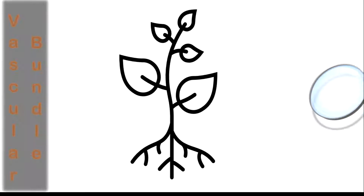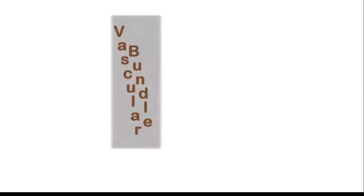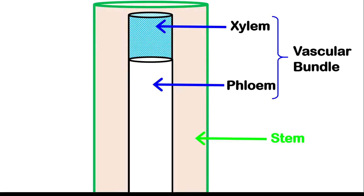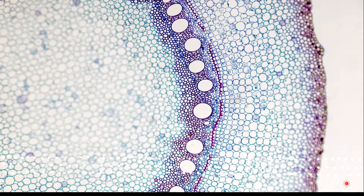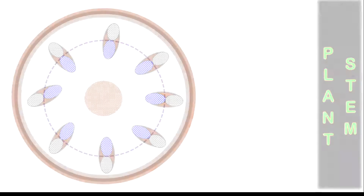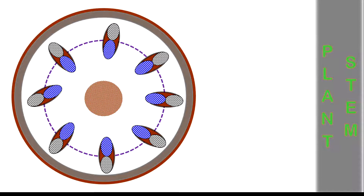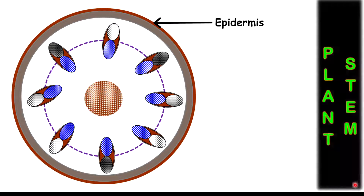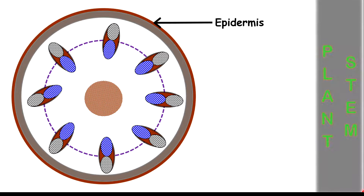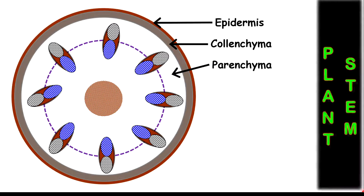If you should zoom into a plant stem, you'll realize that these structures are arranged in a particular way. Looking under a microscope, you will notice that the middle region will be where the vascular bundles are located. The outermost region of a plant stem is called the epidermis. Going inwards, you have the cholenchyma.